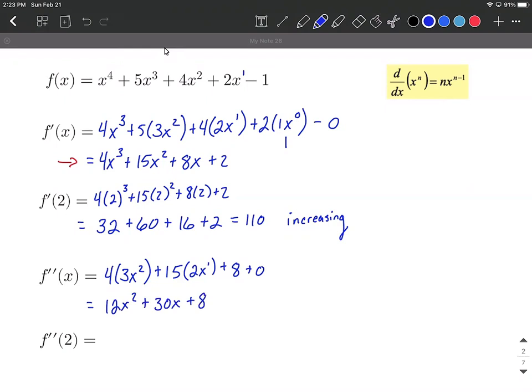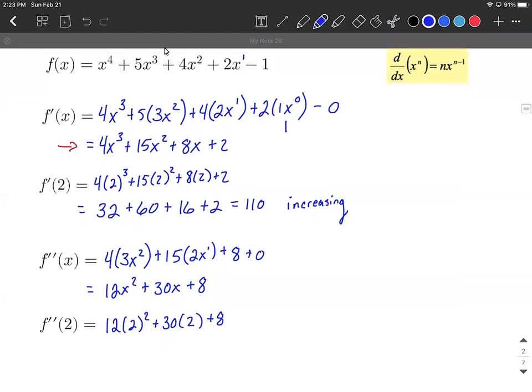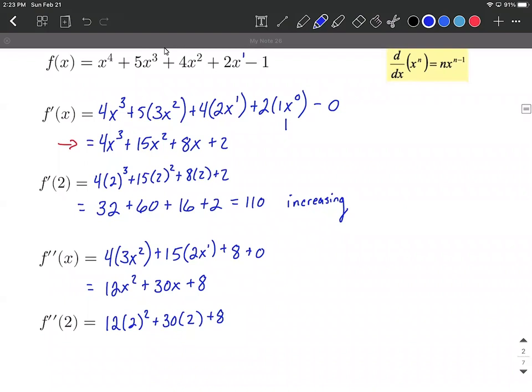If we want to evaluate our second derivative at a given value, this time being two, you just replace each of the x's on the right hand side with the given value. So here we have 12 times four is 48, plus 30 times two is 60, plus eight, which gives us 116.